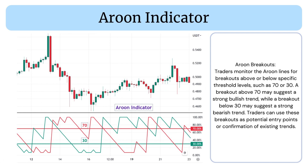Aroon Breakouts: Traders monitor the Aroon lines for breakouts above or below specific threshold levels, such as 70 or 30. A breakout above 70 may suggest a strong bullish trend, while a breakout below 30 may suggest a strong bearish trend. Traders can use these breakouts as potential entry points or confirmation of existing trends.